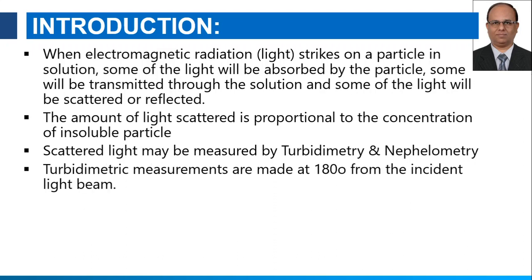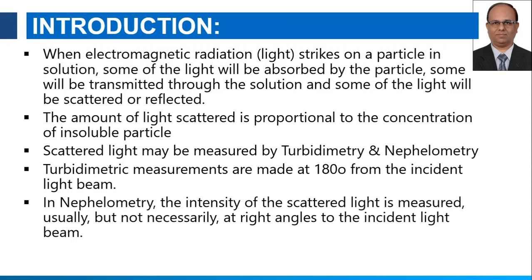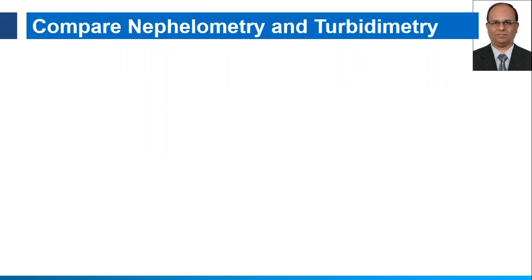Turbidometric measurements are made at 180 degrees from the incident beam of radiation, that is the source. While in Nephelometry, the intensity of the scattered light is measured usually — but not necessarily — at a right angle to the incident light beam.